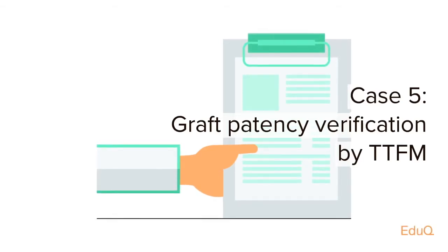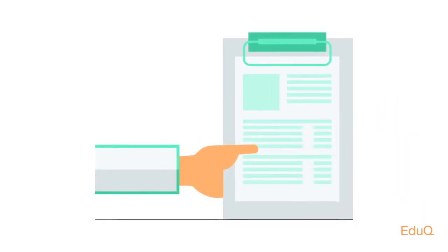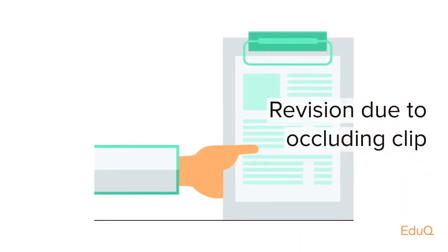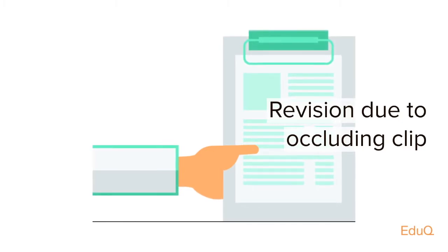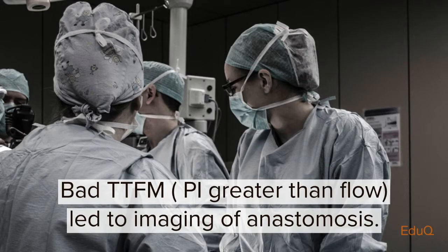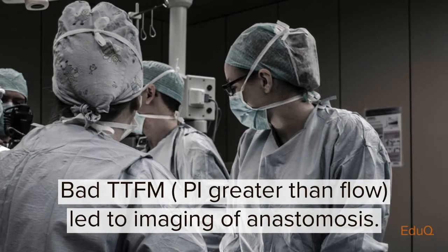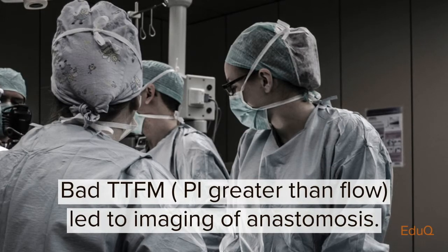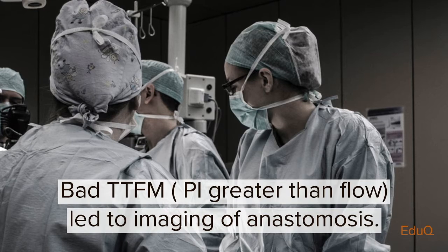The next step in the workflow was to do TTFM on the graphs. And here we have a revision due to an occluding clip. We will take a closer look at how a bad TTFM, where the PI is greater than the flow, led to imaging of the anastomosis.